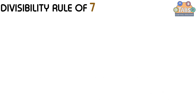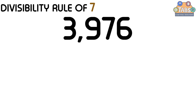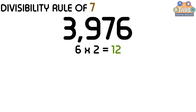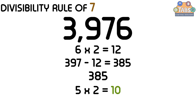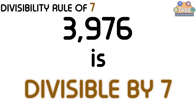Now let us try another example: 3976. The first step is we need to double the last digit of the number, which is 6. 6 times 2 is equal to 12. Then we need to subtract 12 from the remaining digits of the number, which is 397. So 397 minus 12 is equal to 385. Now we can repeat the two steps until it becomes a smaller number. The first step is we double the last digit, which is 5. 5 times 2 is equal to 10. Then we subtract 10 from the remaining digits, which is 38. 38 minus 10 is equal to 28. And 28 is a multiple of 7. Therefore, 3976 is divisible by 7.